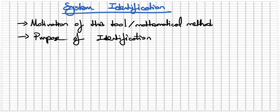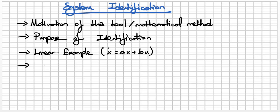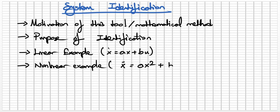We need to identify our systems because of the many unknown parameters in the system. We can create a linear example — an LTI (linear time-invariant) system — for example, x_dot = Ax + Bu. We can also create nonlinear examples, such as x_dot = A·x² + Bu, or a non-minimum phase system like A·x² + B·u·x.